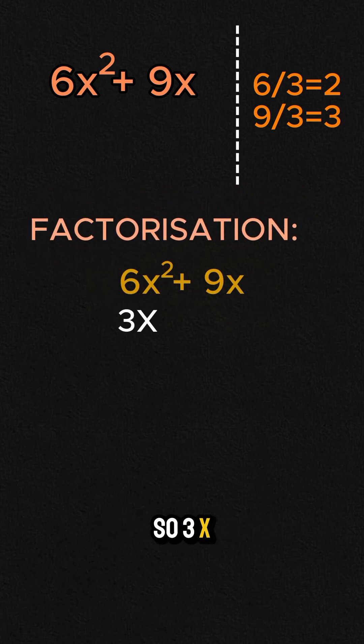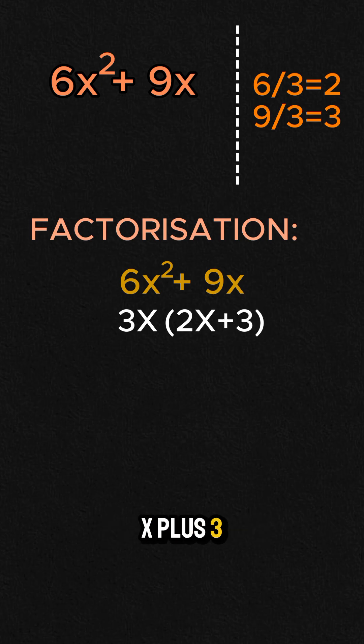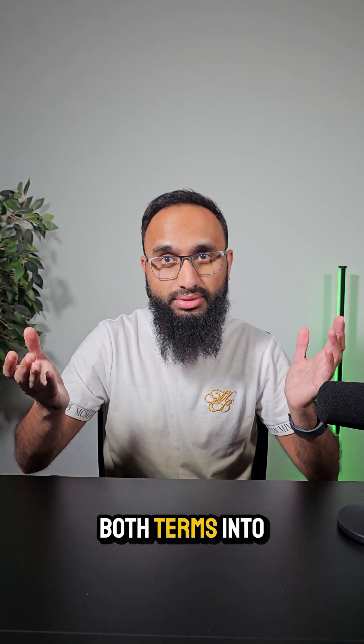So we factorize. So 3x comes outside the bracket and then inside we've got 2x plus 3. So we've packed both terms into one box.